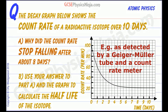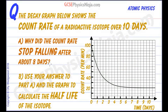The first question is why did the count rate stop falling after about 8 days? It does seem to be flat after about 8 days. And secondly, we're asked to calculate the half-life of the isotope from our answer to part A.